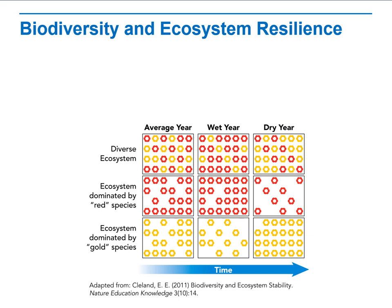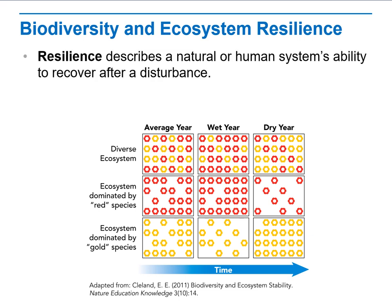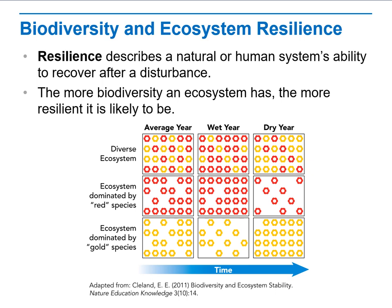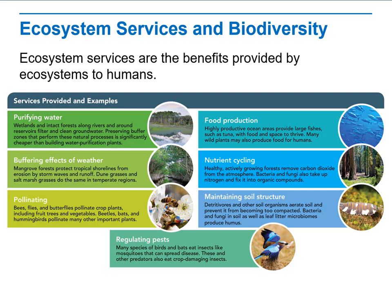Biodiversity and ecosystem resilience means how a diverse ecosystem can be affected over the years, and how its dominant and recessive traits can change over time. Resilience describes a natural or human system's ability to recover after specific environmental changes. The more biodiversity an ecosystem has, the more resilience it will likely have.